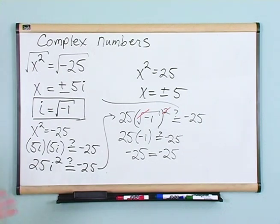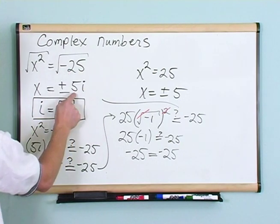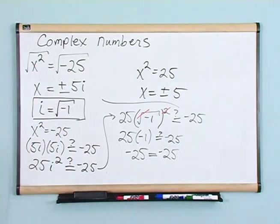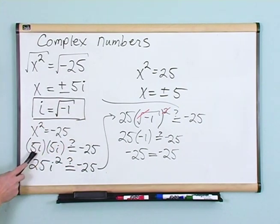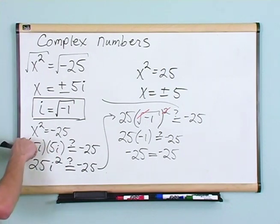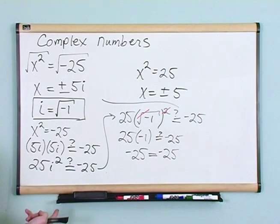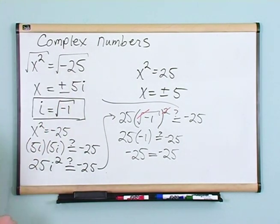The bottom line: there's this thing called i — not really a number in the traditional sense, but something made up to solve equations involving square roots of negative numbers. i = √(-1), and any time you face the square root of a negative number, take the square root of the positive part, write it with ±, and append i. Notice there are two solutions: +5i and -5i, because (-5i)×(-5i) also gives -25 — the two negatives multiply to positive, giving the same result.